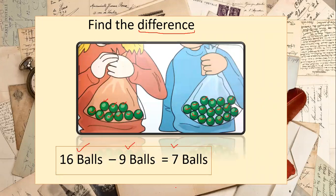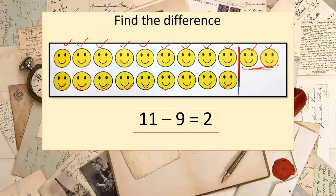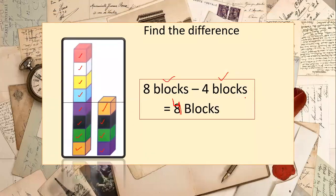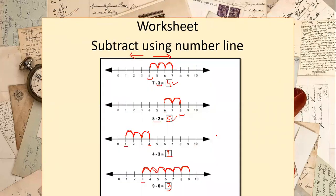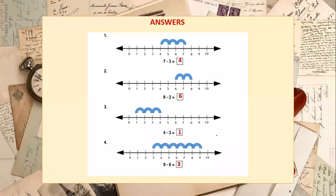For your homework, this page is in your book. You will write: 16 balls minus 9 balls equals 7 balls. You will write all of the examples in your books. You also have a worksheet for today — you need to print out this worksheet and paste it in your neat copies.